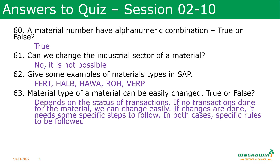Can the material type of a material be easily changed — true or false? It depends. If the material has not undergone any transactions, then we can change the material type. If it has undergone some transactions, then we need to do some steps before doing the material type change, like removing the stock, closing the purchase orders, those kind of activities. There are some rules we need to follow — the rules we discussed in the last session, please go through them.